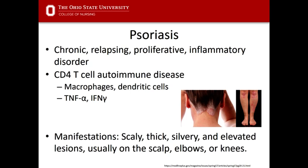Psoriasis is a chronic relapsing proliferative inflammatory disorder that generally affects the skin, scalp, and nails. It can occur at any age but usually manifests by age 40. It is a T-cell mediated disease, but this is not considered a type 4 hypersensitivity — it is a T-cell mediated autoimmune disease. Macrophages, dendritic cells, and CD4-positive helper T-cells are involved, along with cytokines TNF-alpha and interferon gamma, which contribute to plaque development.